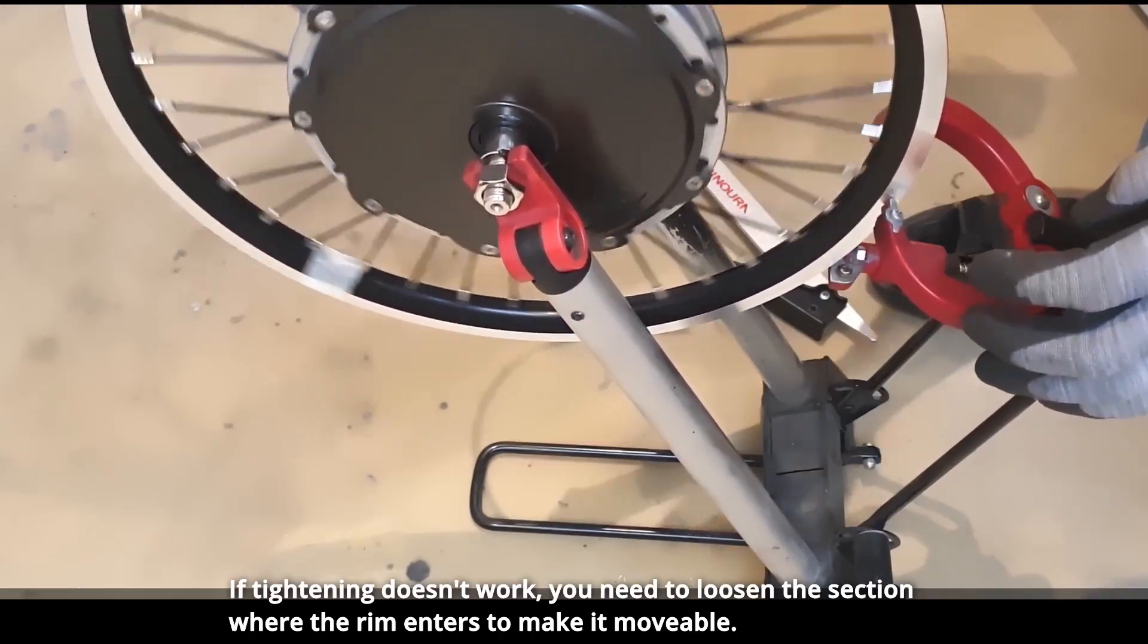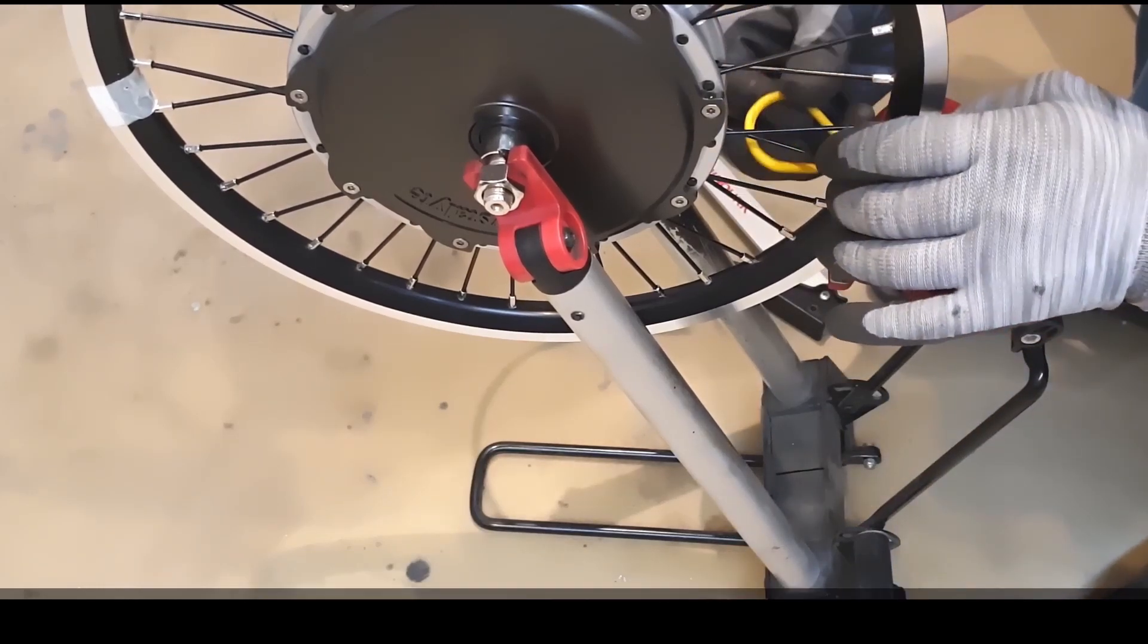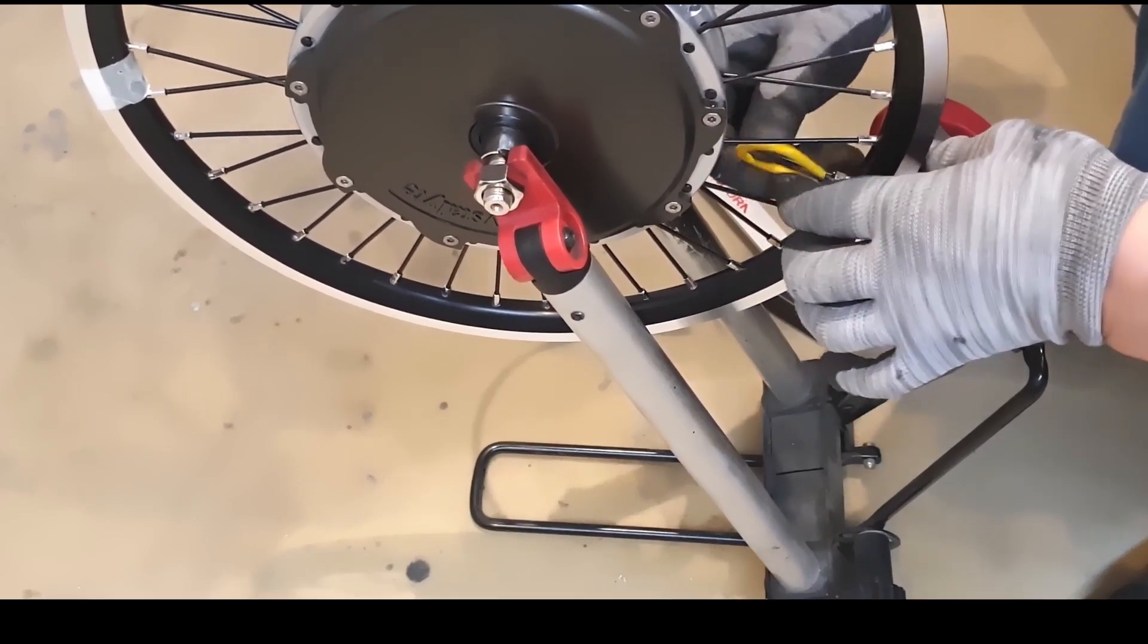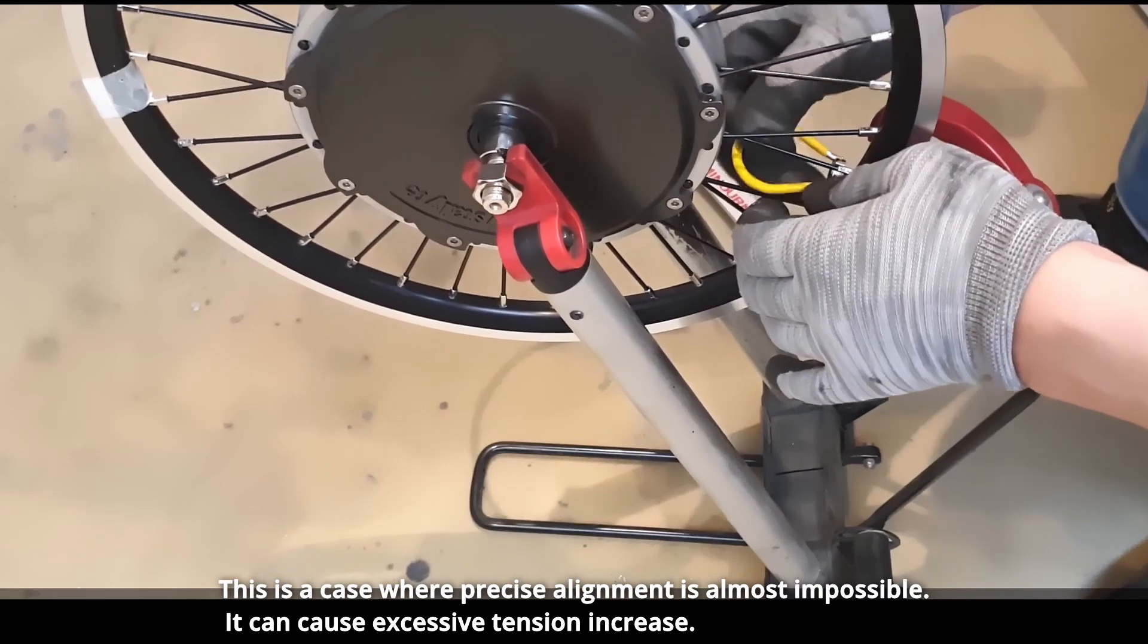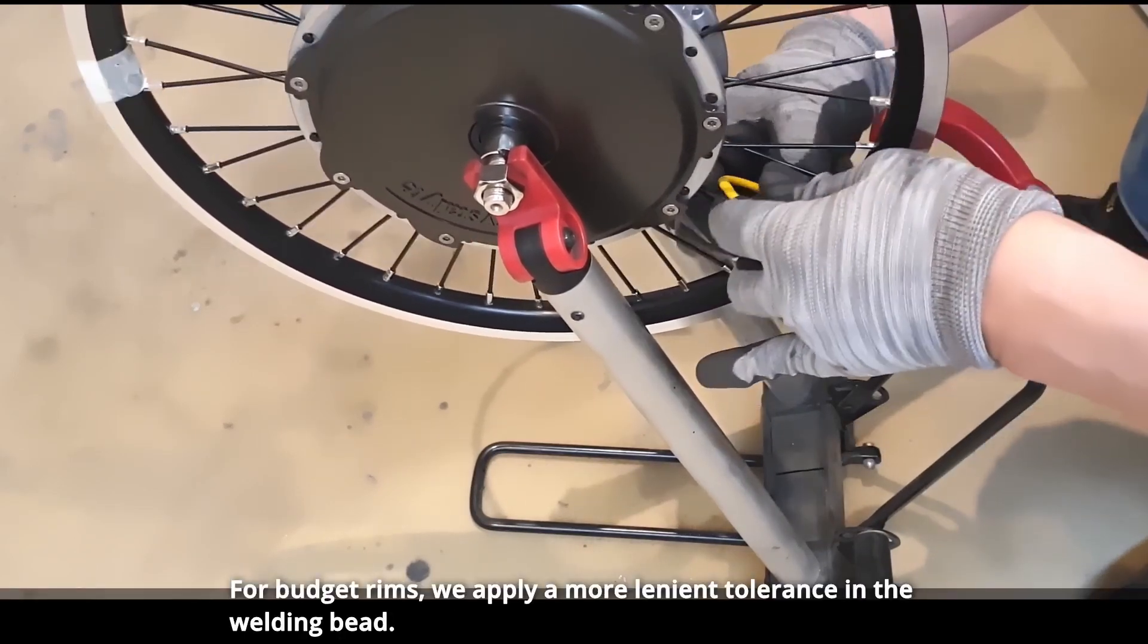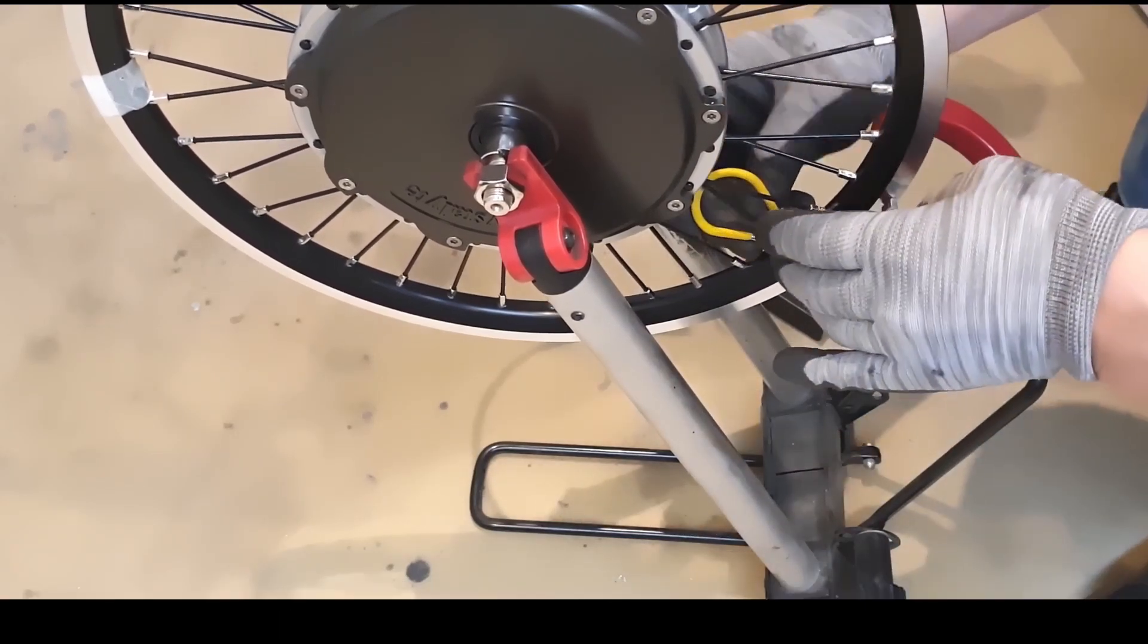If tightening doesn't work, you need to loosen the section where the rim enters to make it movable. Budget rims are not perfectly round. Be careful, this is a case where precise alignment is almost impossible. It can cause excessive tension increase. For budget rims, we apply a more lenient tolerance in the welding bead.